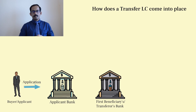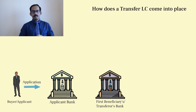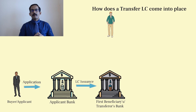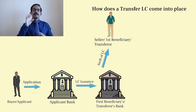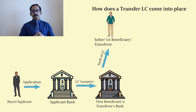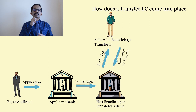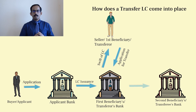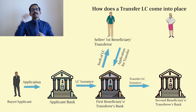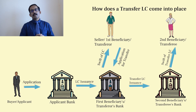The buyer approaches his bank — the applicant bank — and applies for an LC to be issued to the seller. The applicant bank issues the LC based on accepted terms and conditions, and the SWIFT message is sent to the seller's bank, which is the first beneficiary bank. The LC is intimated to the first beneficiary. The first beneficiary, wanting to make payment to his supplier for the goods covered under the LC, approaches the first beneficiary bank and applies for transferring the LC to his supplier. The first beneficiary bank then issues a transfer LC to the second beneficiary's bank, which intimates the supplier or manufacturer accordingly.